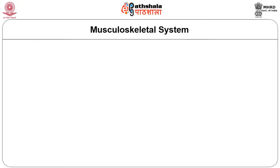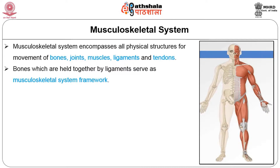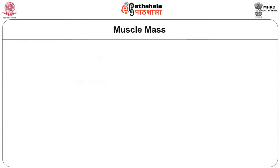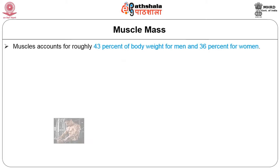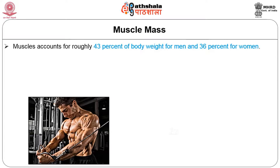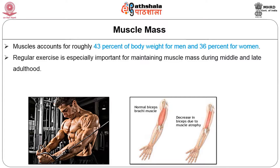Let's talk about the skeletal system. The skeletal system comprises bones, cartilage, and muscle. Muscle includes a number of muscle fibers across the body, the tendons which join the muscle to the bone, and the ligaments which join a bone to another bone. The muscle mass of an individual varies through different ages, and the muscle mass for men is higher as compared to women.